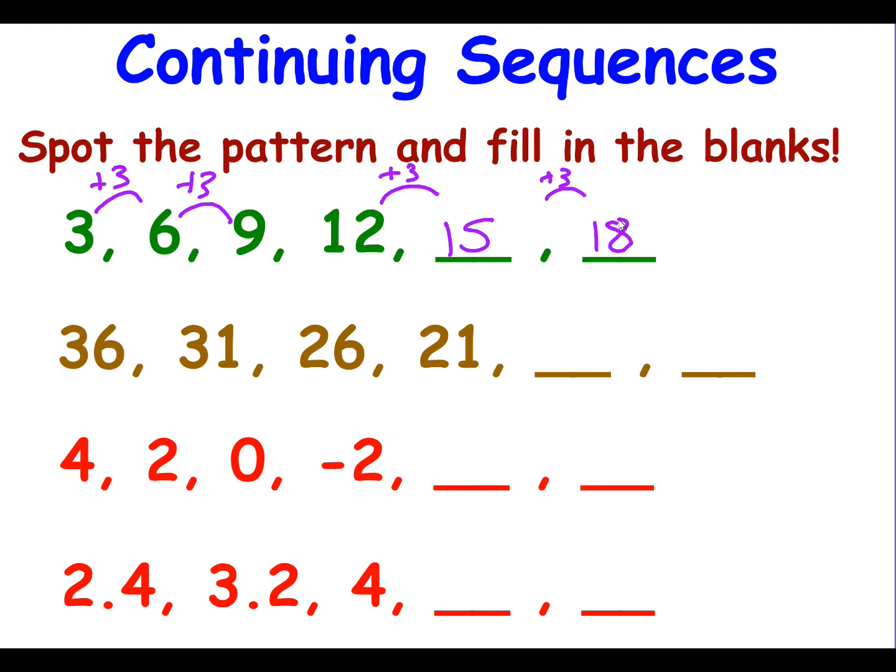Now remember, sequences can go down as well as up. So if I'm going from 36 to 31, I'm subtracting 5. I'm subtracting 5 every time. So in order to continue with my sequence, I need to use my rule which is subtract 5. So I end up with 16 and 11 as the two missing numbers.